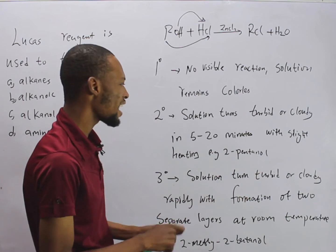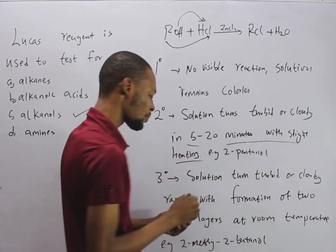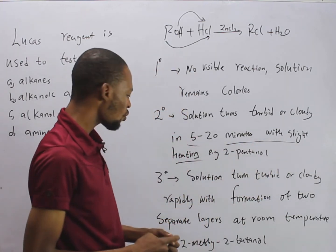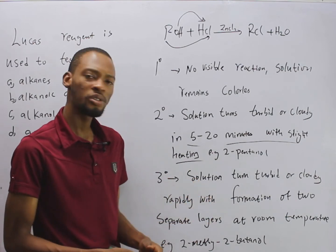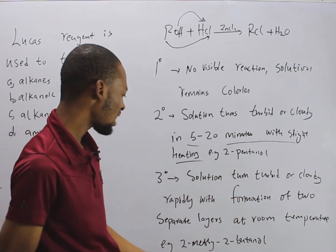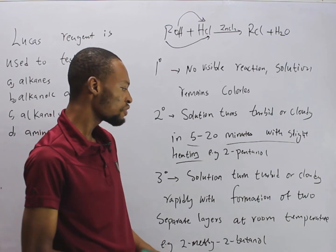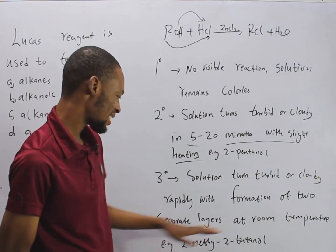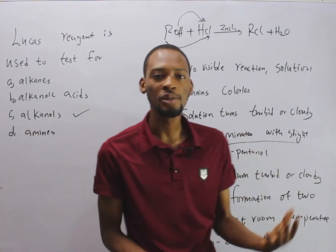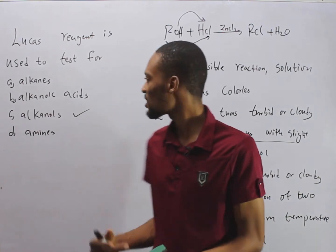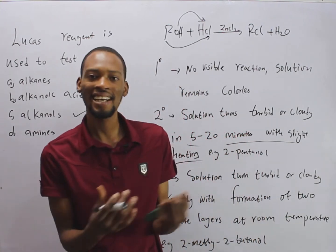For tertiary alcohols, the solution turns turbid or cloudy rapidly with the formation of two layers at room temperature. These are the ways we can test for primary, secondary, and tertiary alcohols using Lucas reagent.